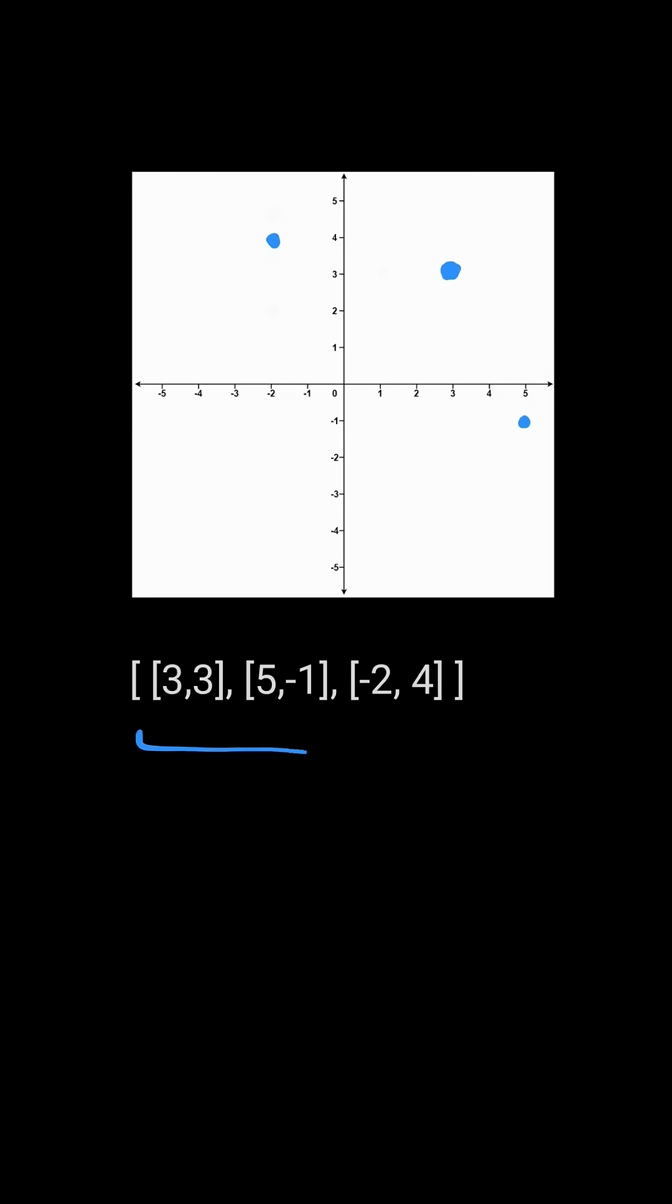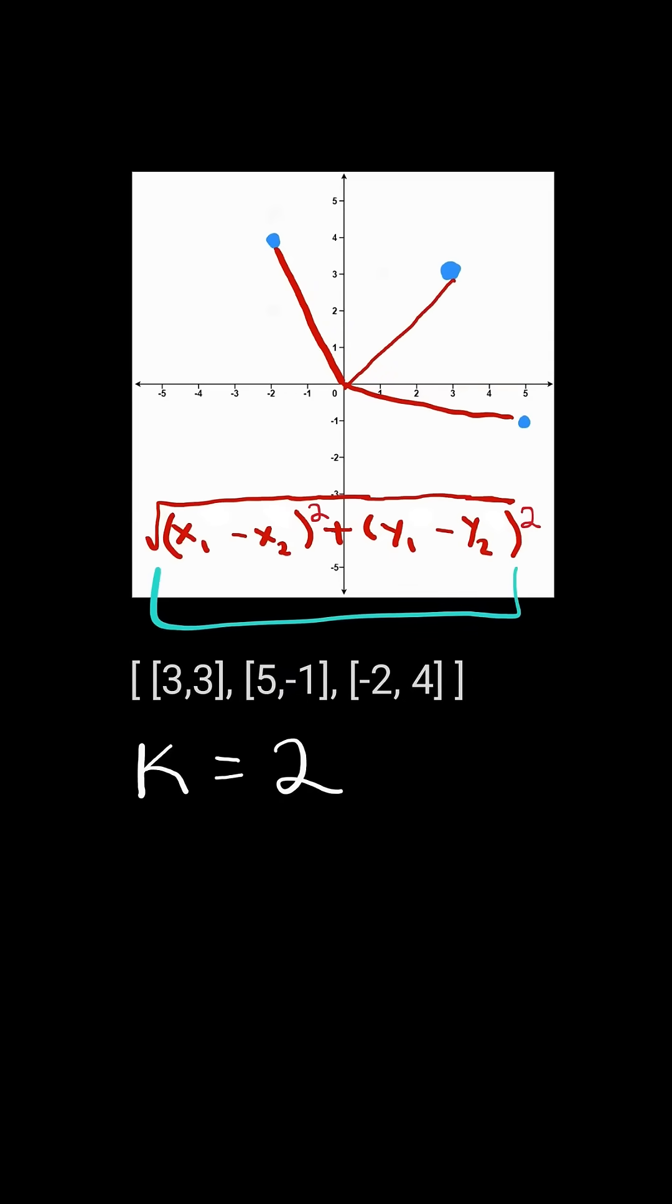K closest points to origin. Given a list of points and an integer k, return the k points closest to the origin. We can use the Euclidean distance formula and return the k points with the closest distance to the origin.